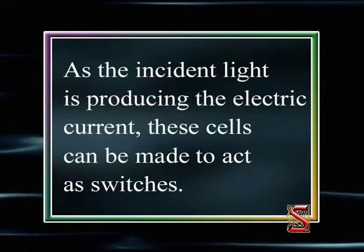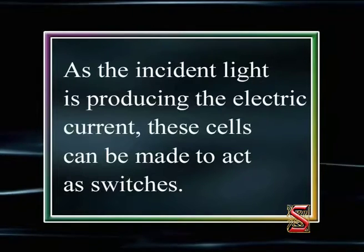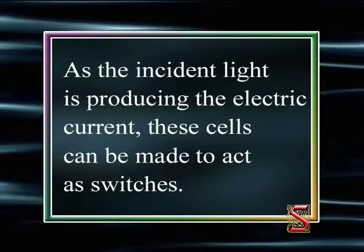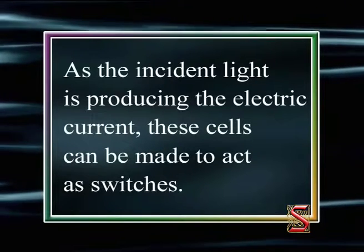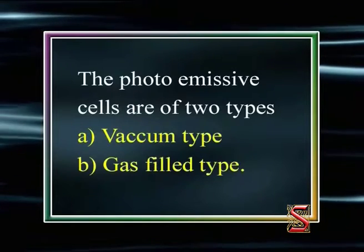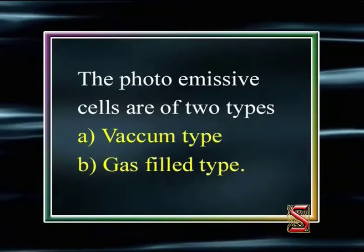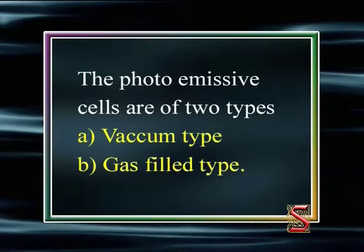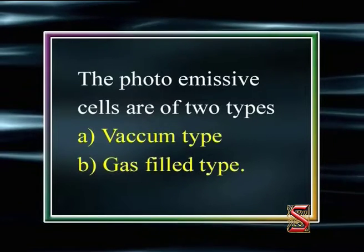As the incident light is producing the electric current, these cells can be made to act as switches. The photoemissive cells are of two types: vacuum photoemissive cells and gas-filled photoemissive cells.